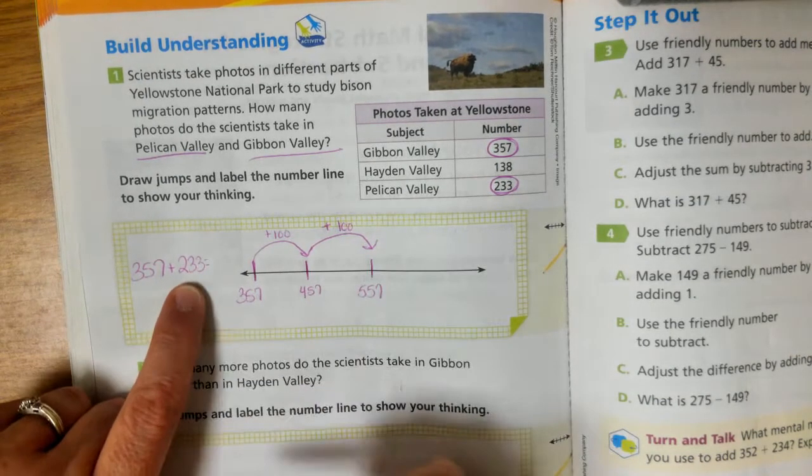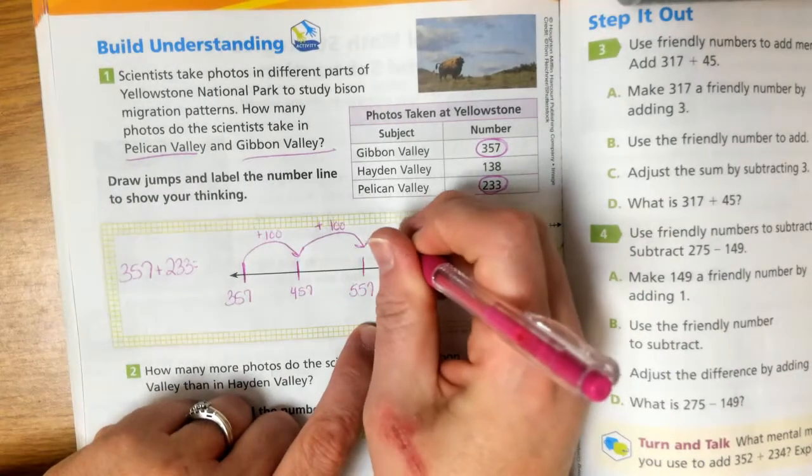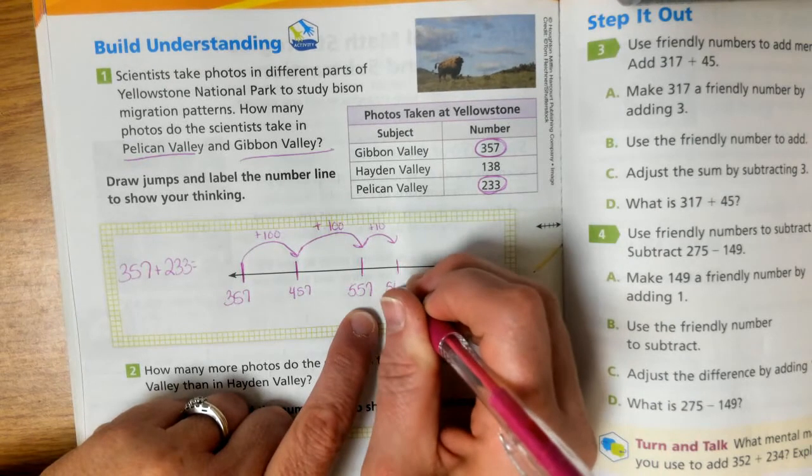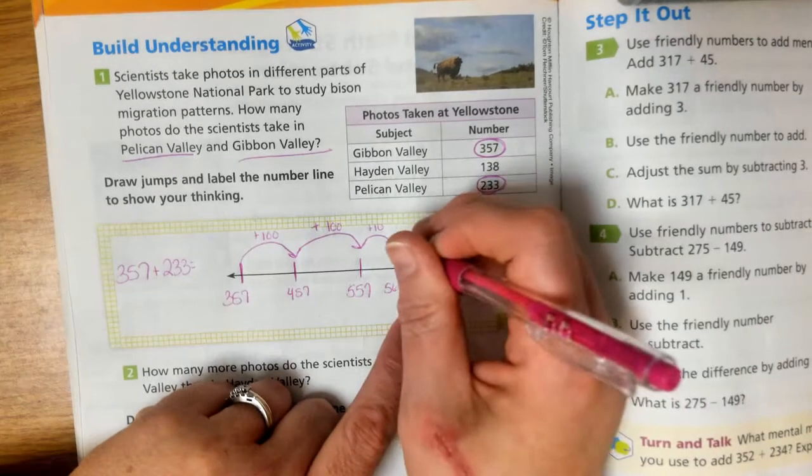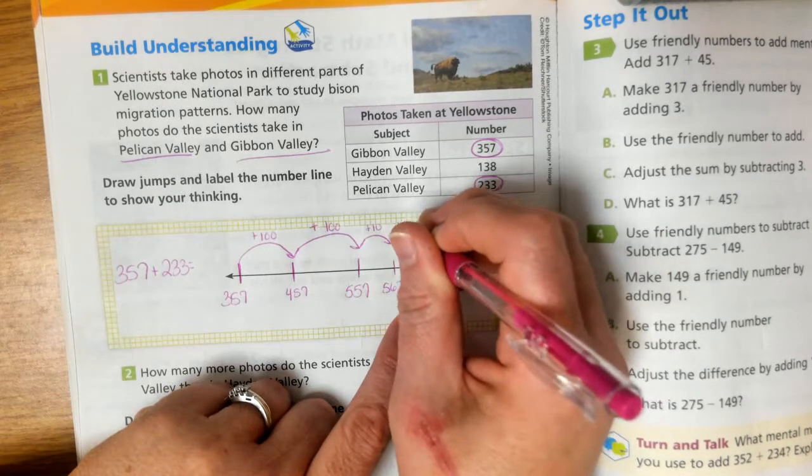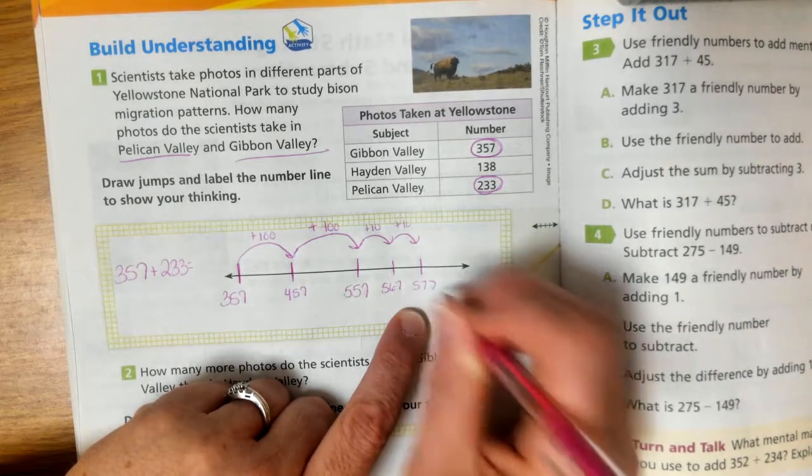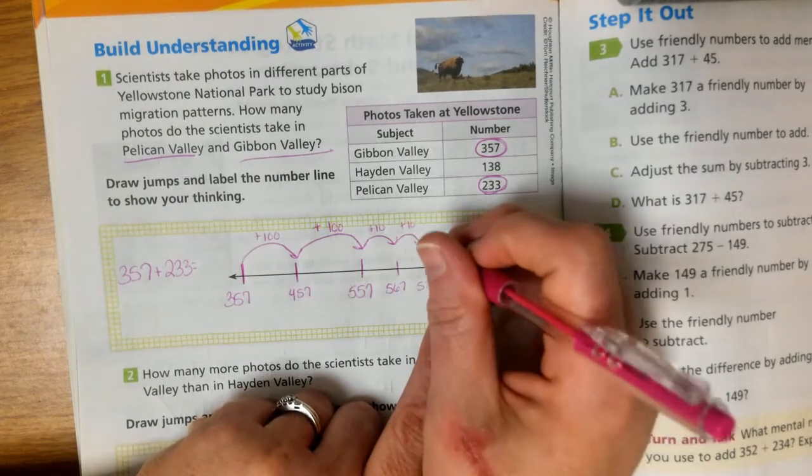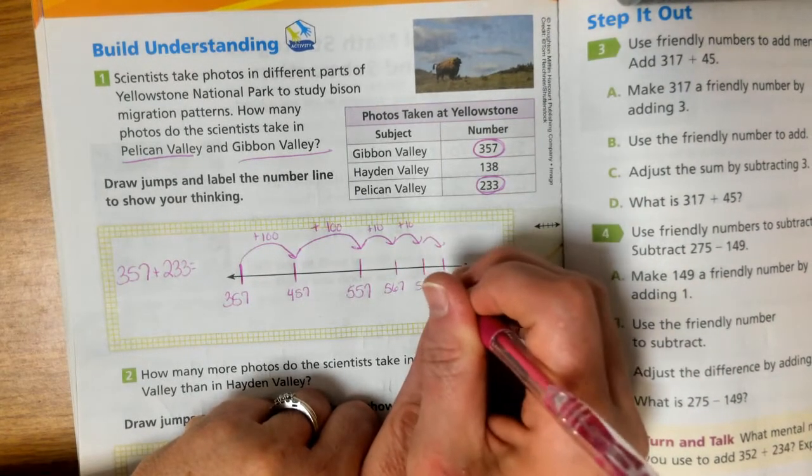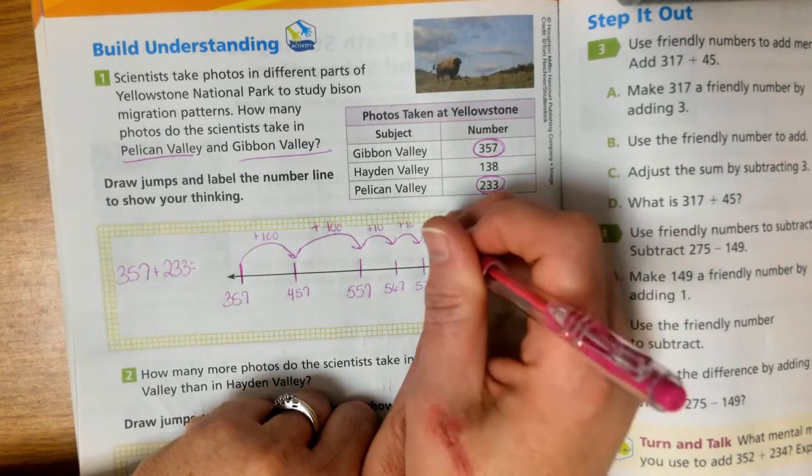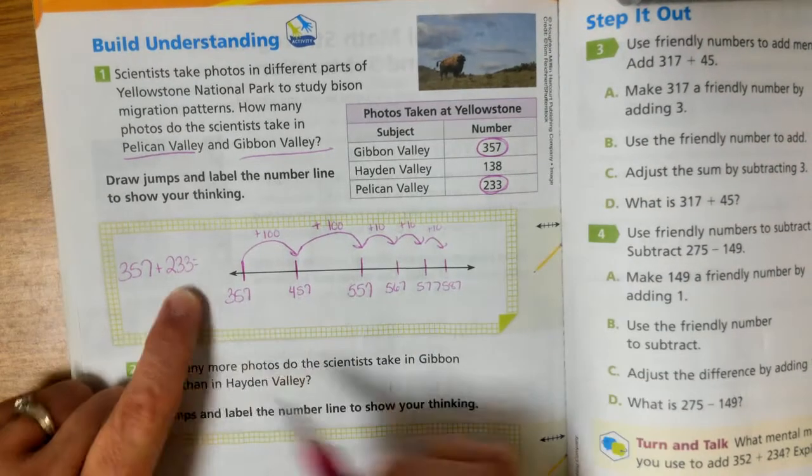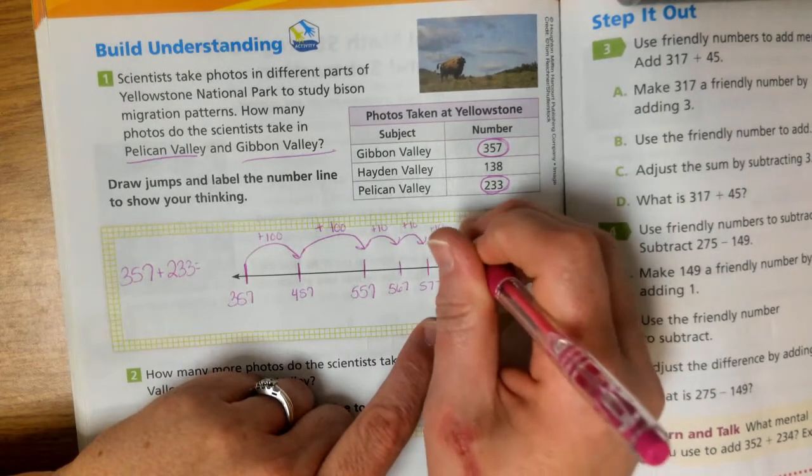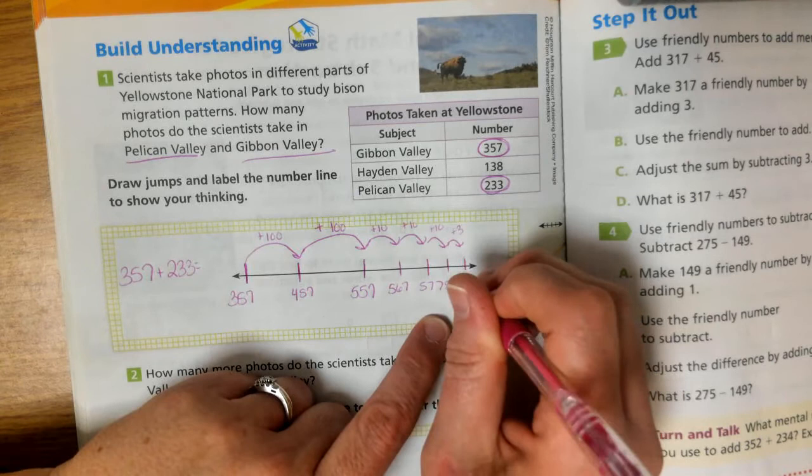Now, how many 10s do I have? I have three 10s. So if I jump by one of my 10s, which would be 567. The second 10 is 577. I guess I should have put those a little closer together. My third 10, 587. And then what do I have left? Now I've got my ones place left. I'm going to add a 3. So that would be 590.